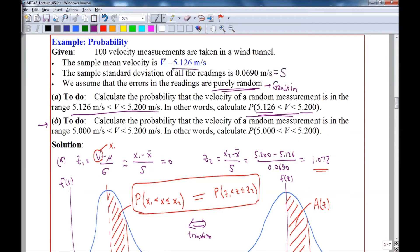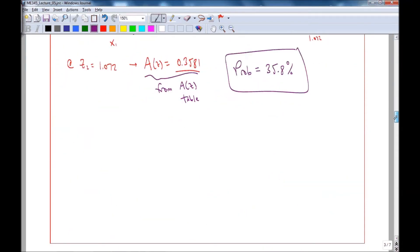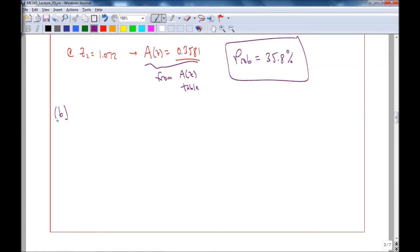Part B of this problem asks us to calculate the probability that the velocity of some random measurement is in a different range, 5 to 5.2. And so we approach this in a similar manner. First we calculate Z1. Z1 is X1 minus X bar over S. And we plug in the numbers, we get negative 1.826.